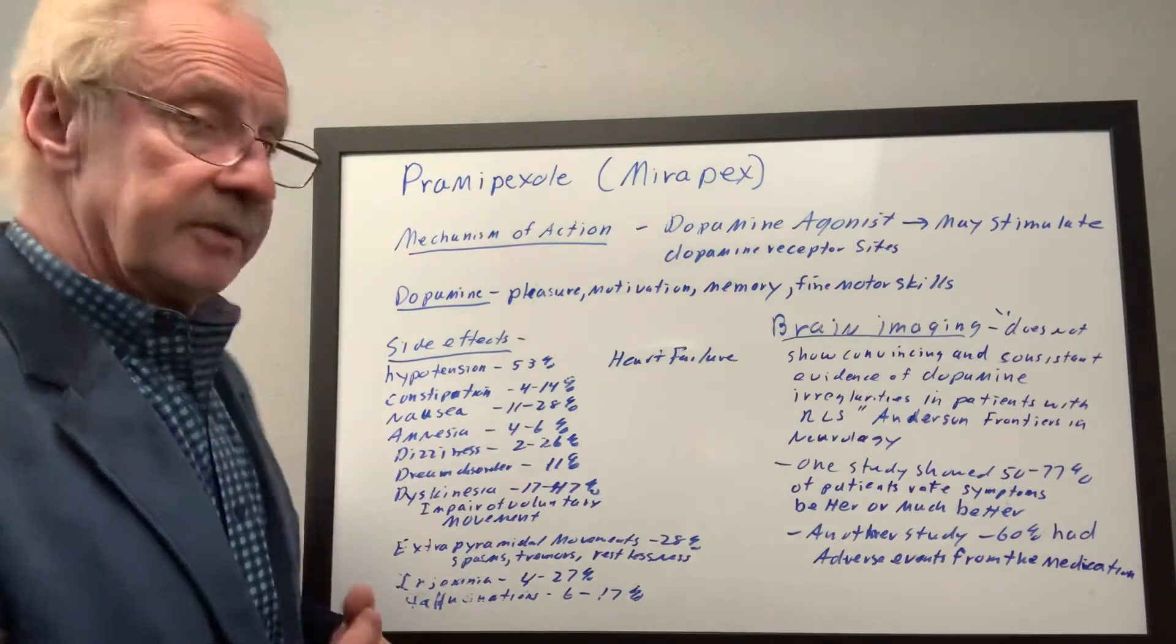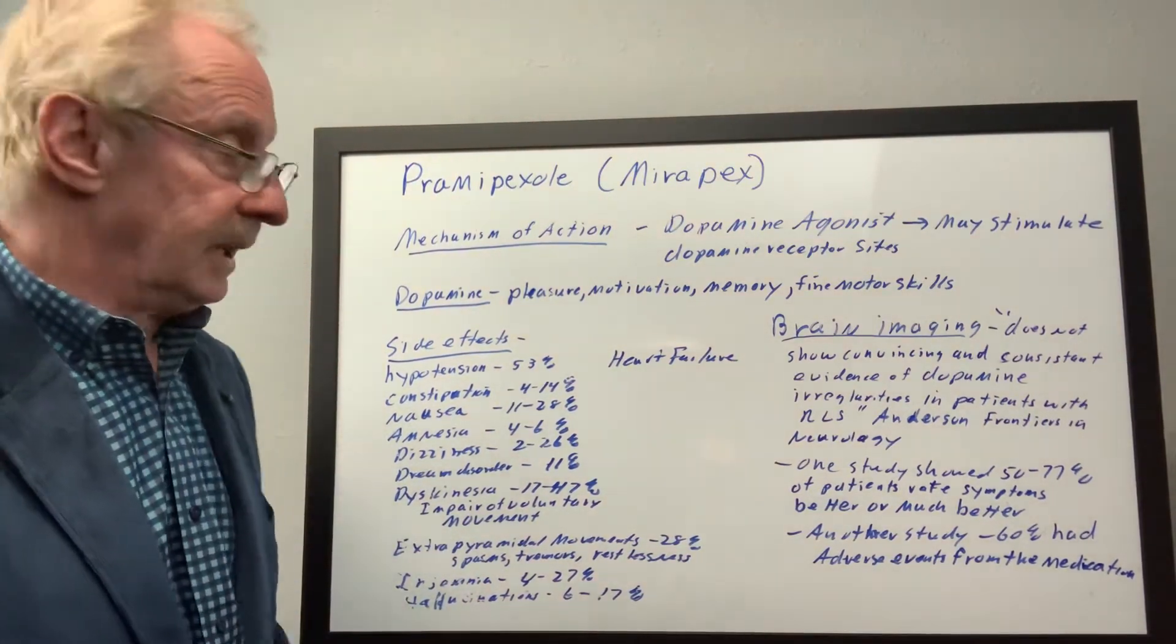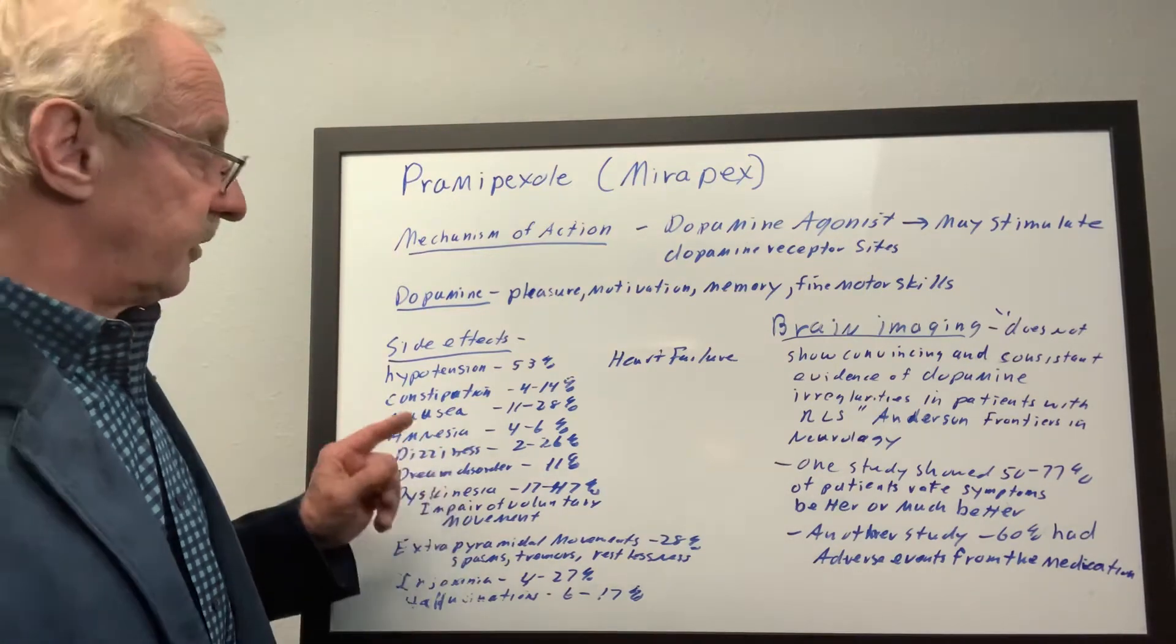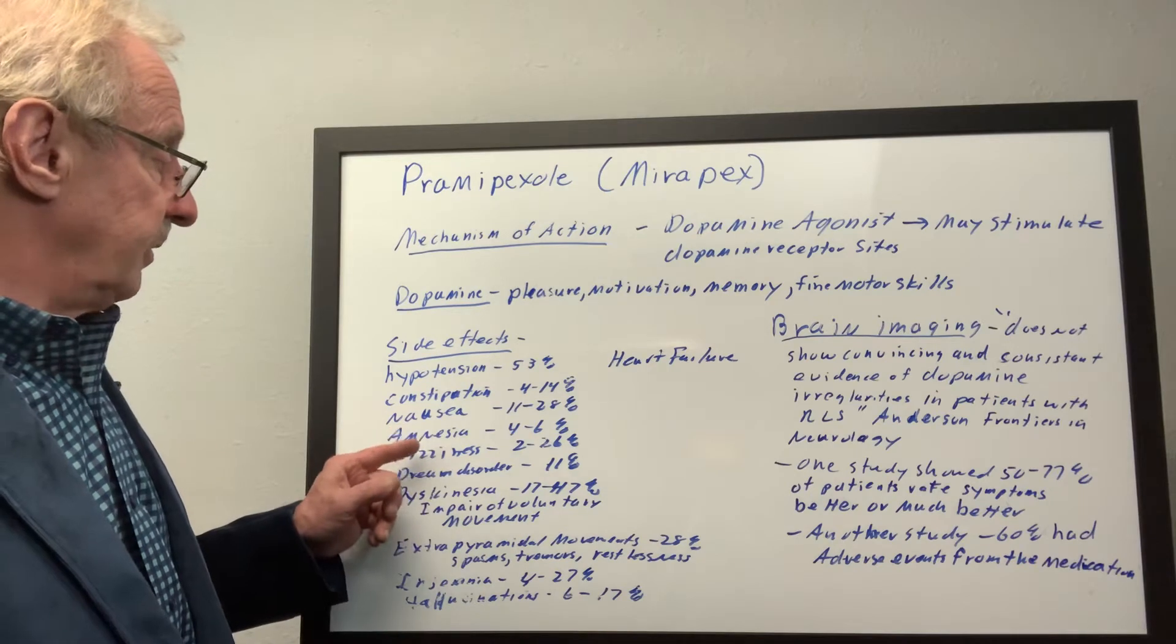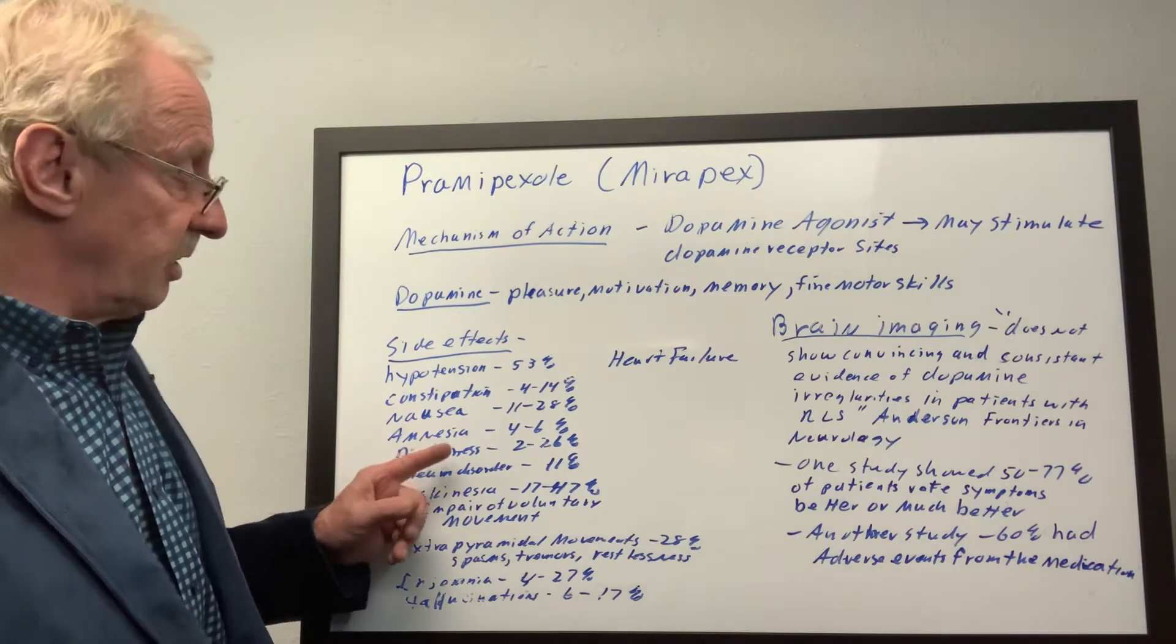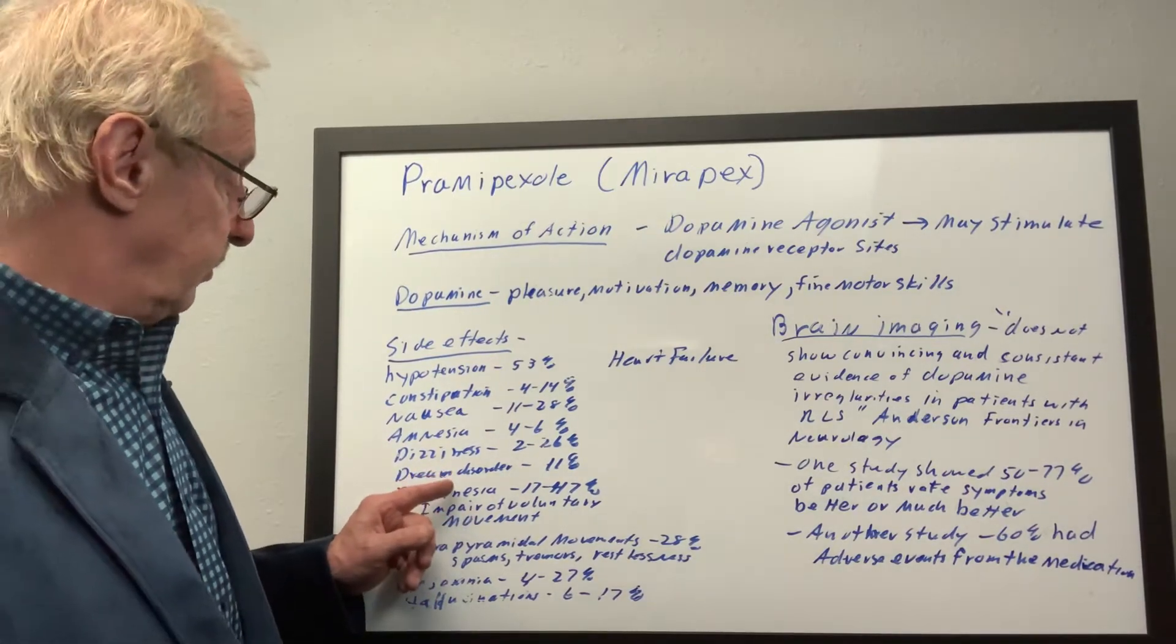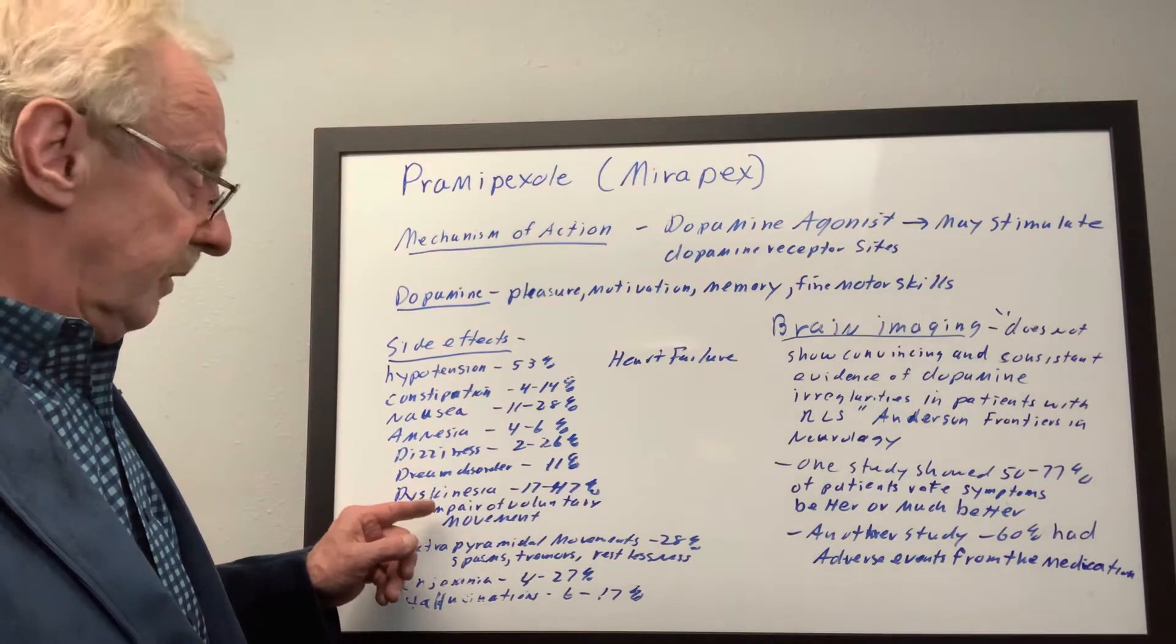So, let's talk about side effects, and there's a whole list of side effects here. Number one would be hypotension - 53% of people might experience hypotension. Constipation, about 4% to 14%. Nausea is 11% to 28%. Amnesia is 4% to 6%. Dizziness is 2% to 26%. Dream disorder is 11%. Dyskinesia...